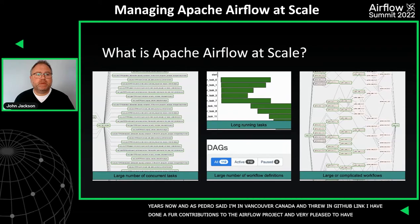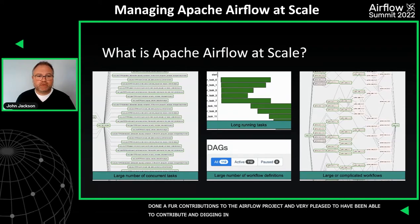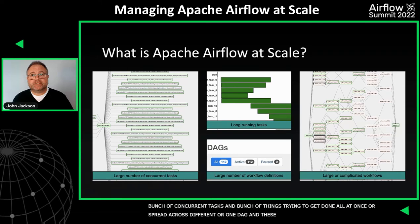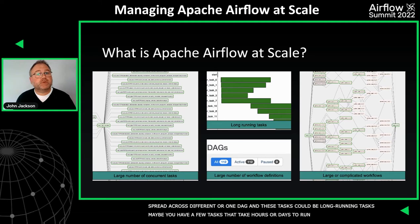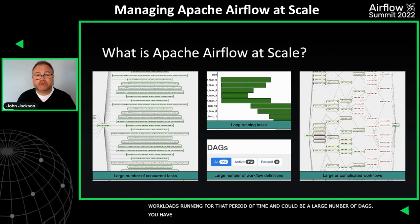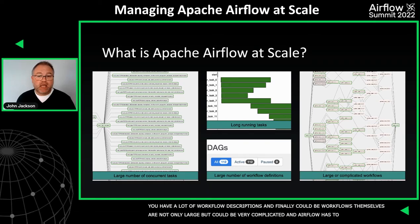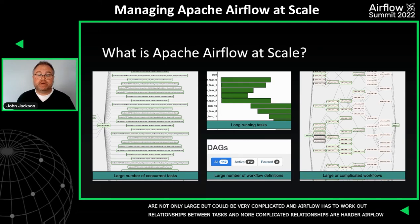What do we mean by running Apache Airflow at scale? One obvious thing is a large number of concurrent tasks — things you're trying to get done all at once, spread across different DAGs or all in one DAG. These tasks could also be long-running, taking hours or days. It could be a large number of DAGs, or workflows that are not only large but very complicated. Airflow has to work out all the relationships between tasks, and the more complicated those relationships are, the harder Airflow has to work.